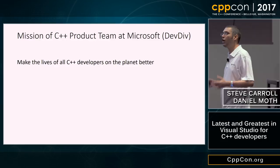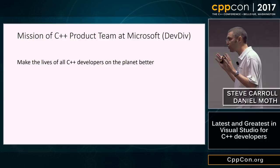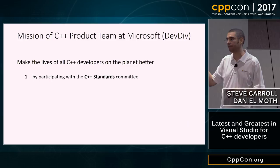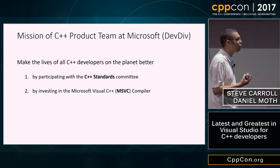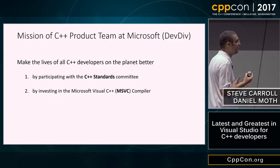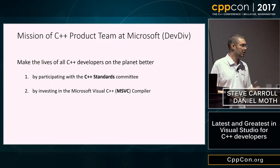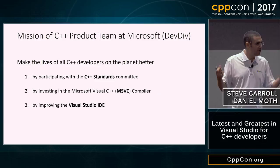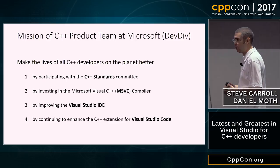We pursue that goal in various ways. One is by enthusiastically participating with the C++ standard to improve the language itself for every developer in the world. Another is shipping and improving the Visual C++ compiler and libraries toolset — MSVC — with the goal of it being the best choice on Windows for targeting Windows. We also develop the Visual Studio IDE, aiming to have the best IDE on Windows for targeting any platform. Finally, we continue to improve Visual Studio Code and its C++ extension, which runs on all platforms.